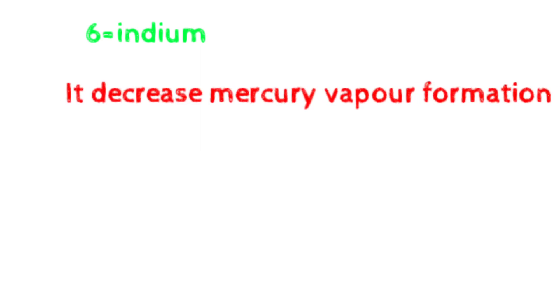Now come to the composition of amalgam. Amalgam composition consists of major and minor constituents. Major means present in high percentage, and minor means present in low percentage.